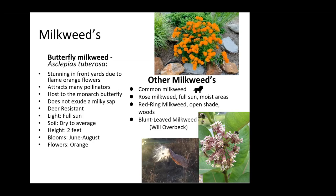Rose milkweed, or swamp milkweed, likes moist areas but is less aggressive than common milkweed. I do have common milkweed in my yard and I think I've pretty well seeded the pasture across the road with it — so if you have farmers around you, it's fairly aggressive and maybe not great for your neighbors. You might want to do rose milkweed or butterfly milkweed — some of the others that don't spread as much. Will Overbeck with the native plant society likes the blunt-leaved milkweed.